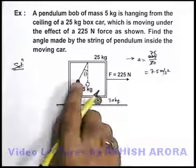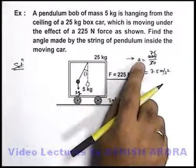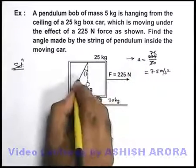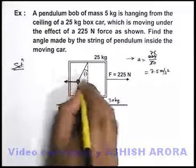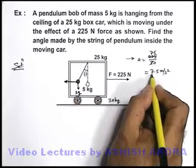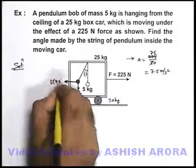And if we just look at the bob with respect to car, as car is an accelerated reference frame, due to this non-inertial nature of car, the bob will experience a pseudo force in backward direction that will be mass of bob multiplied by the acceleration of car. That will be 5 into 7.5.